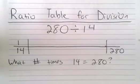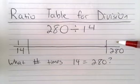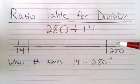But instead of putting the number on top here, that's the number that we don't know, so we leave it blank up here. And we're trying to think, well, what number times 14 is going to be equal to 280?